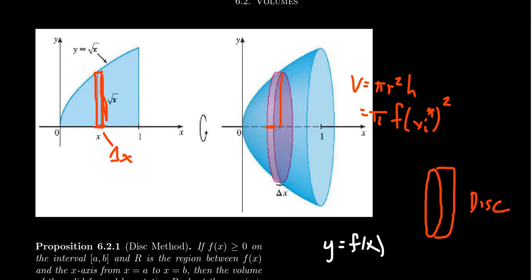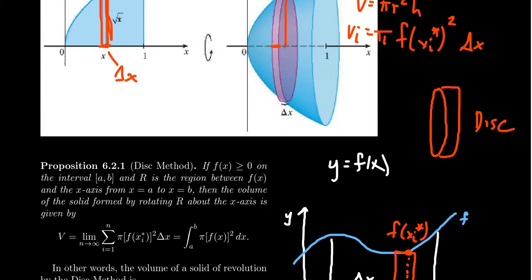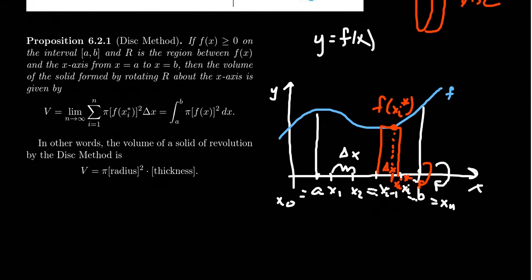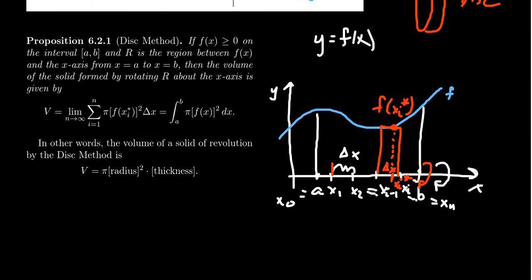The volume of the i-th disk would be pi f of xi star squared times delta x. That gives you the volume of a single cylinder. But what happens if we start doing this for every single interval? We take this rectangle and spin it, take this rectangle and spin it. We get all these different disks stacked side by side by side.